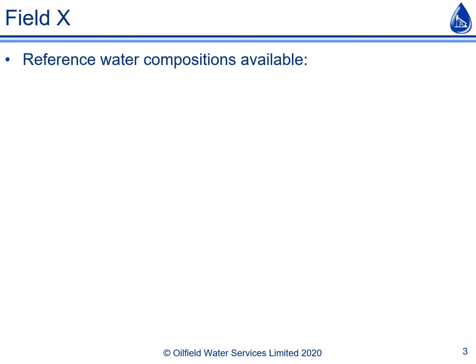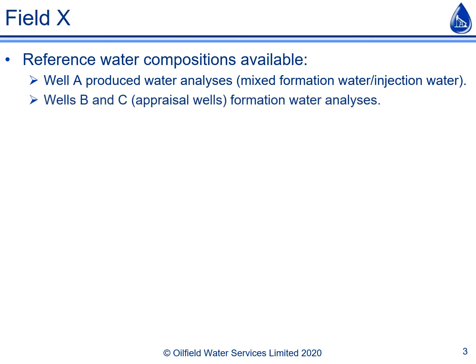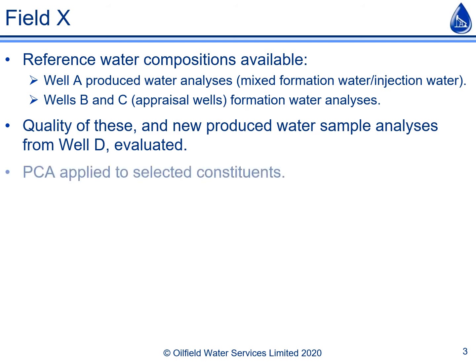In this case there were some additional water compositions available to help answer the questions. Firstly, there were produced water analyses from well A, which were interpreted as mixtures of formation water and injection water. Secondly, there were formation water analyses from two appraisal wells, wells B and C. After the quality of these different sets of data were evaluated and confirmed, principal component analysis was applied to them.